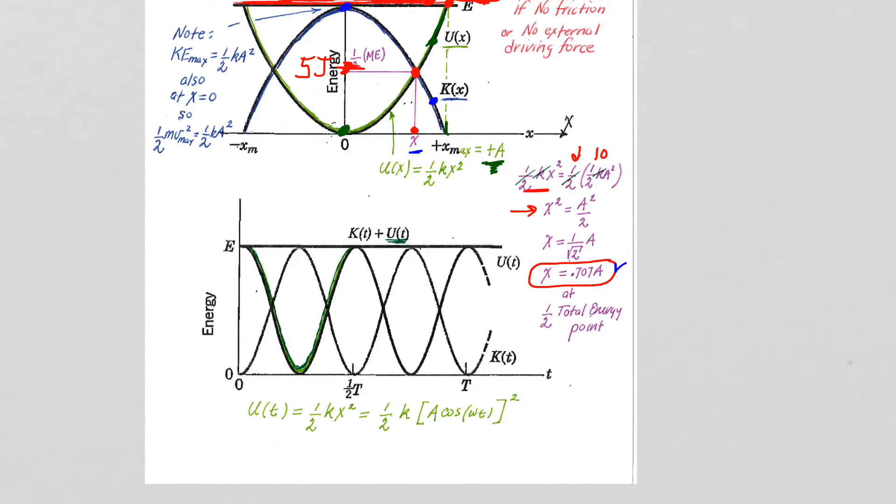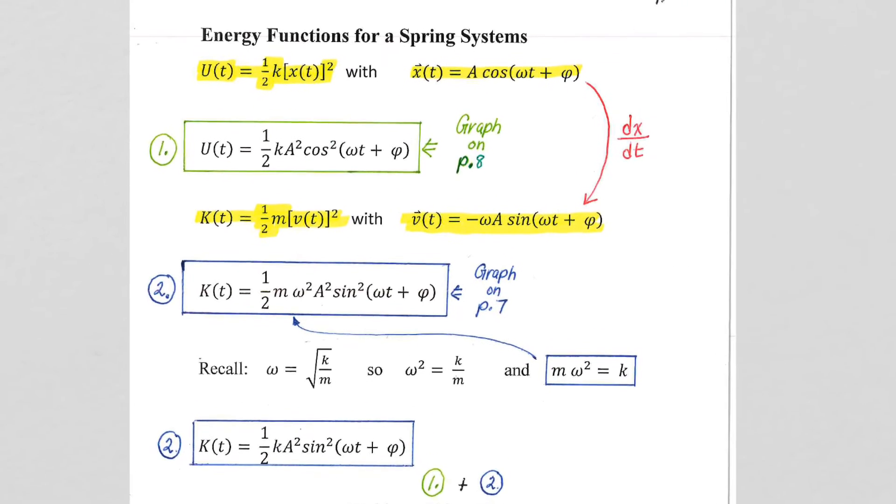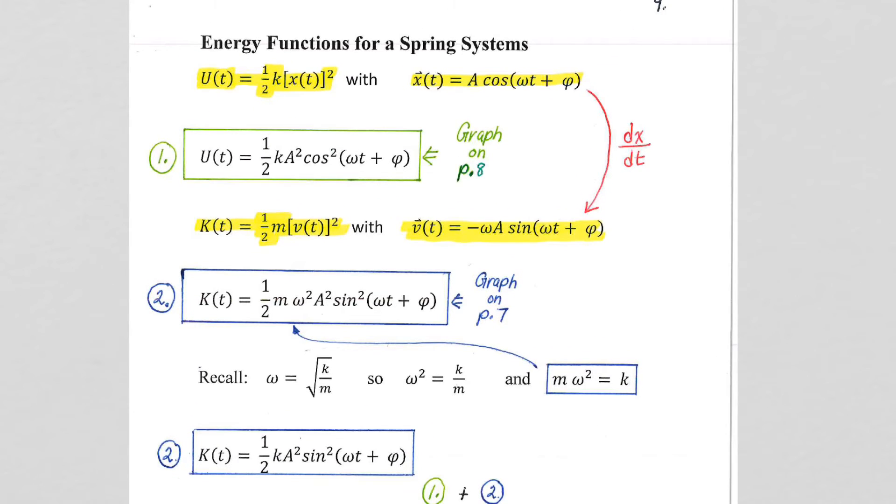All right, so how about our actual equation? So now what we're looking at is a potential energy function, one-half kx squared, but we know x, a cosine omega t plus phi. Well, there you have it.